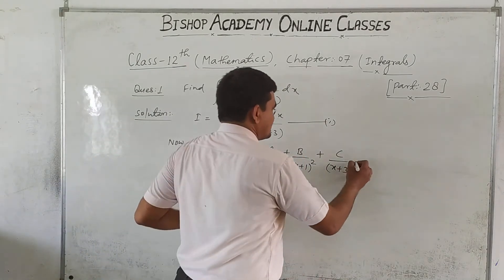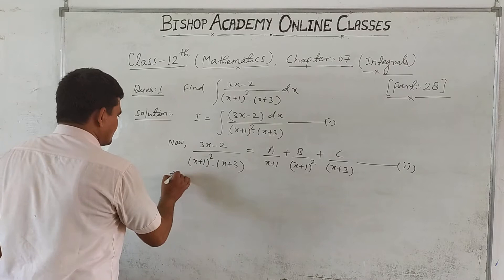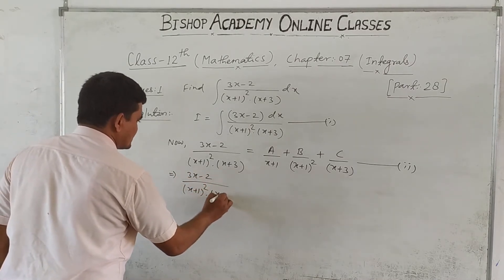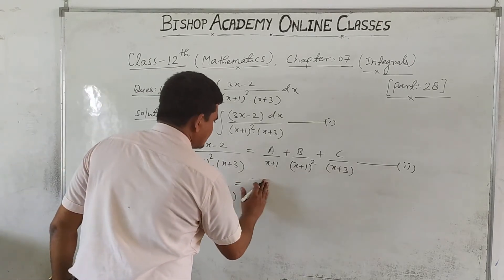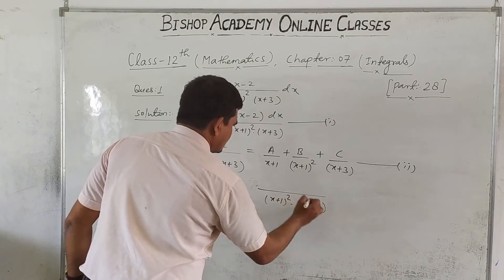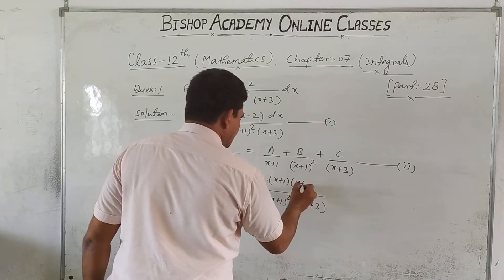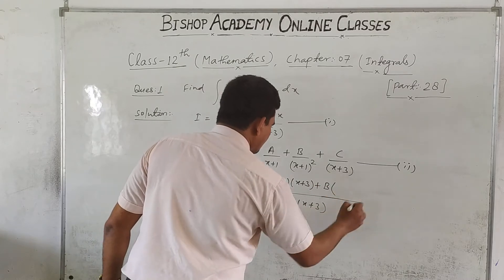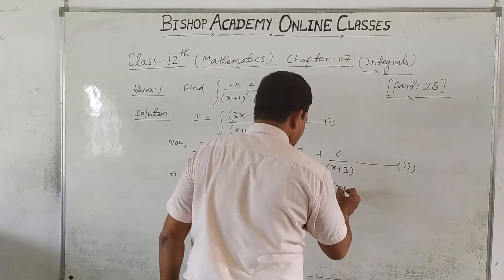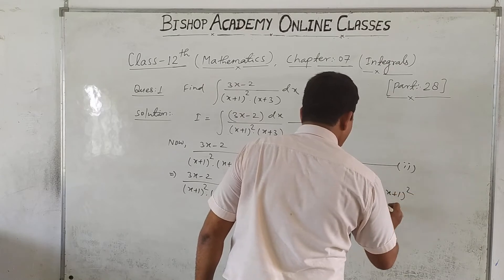This gives us A upon (x+1) plus B upon (x+1)² plus C upon (x+3). Taking the LCM as (x+1)² into (x+3), we divide: this gives A into (x+1)(x+3) plus B into (x+3) plus C into (x+1)².